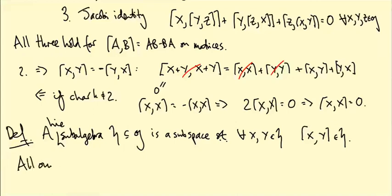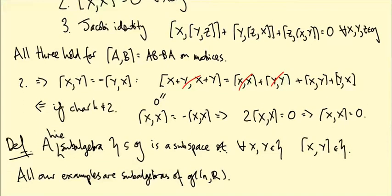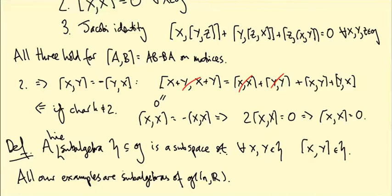And so all our algebras, or all our examples, are sub-algebras, Lie sub-algebras, of little g l n r, the Lie algebra of all matrices with commutator bracket. So in particular, once you've proved the Jacobi identity and the anti-symmetry and bilinearity for the commutator bracket, it follows for all the examples of algebras, Lie sub-algebras of matrices. They just inherit it from the properties of the commutator bracket. So it's an exercise for you to check the Jacobi identity and the anti-symmetry for the commutator bracket.